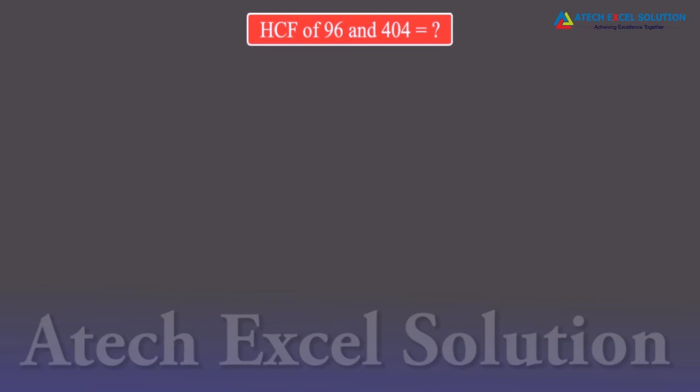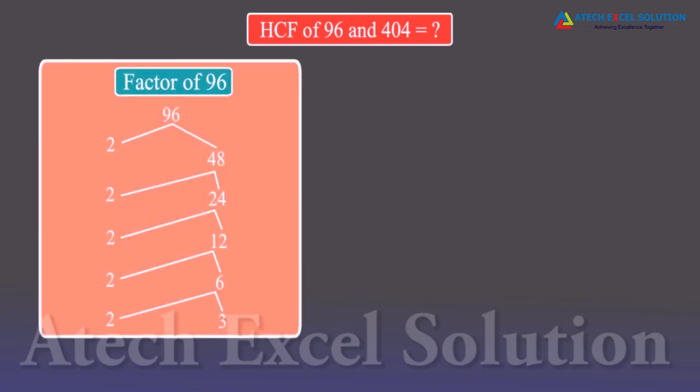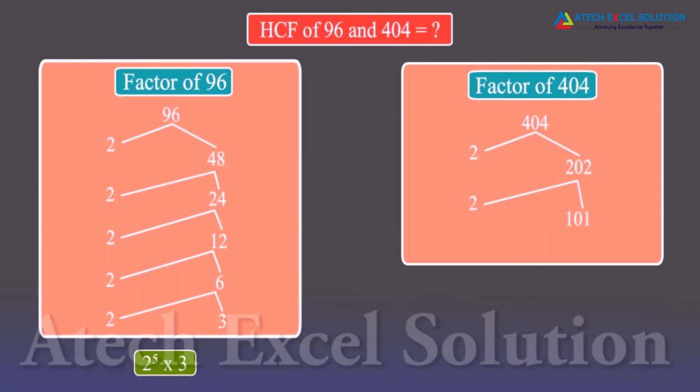For 96, the factors are 2 raised to the power 5 and 3. For 404, the factors are 2 raised to the power 2 and 101. The common factors in these two numbers are 2 raised to the power 2.